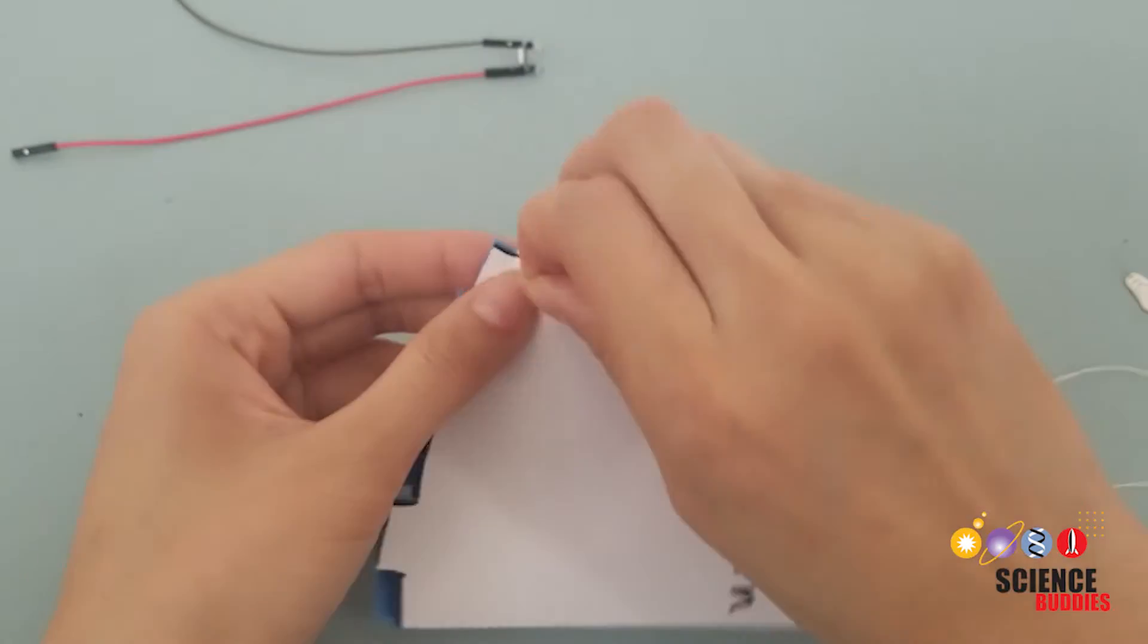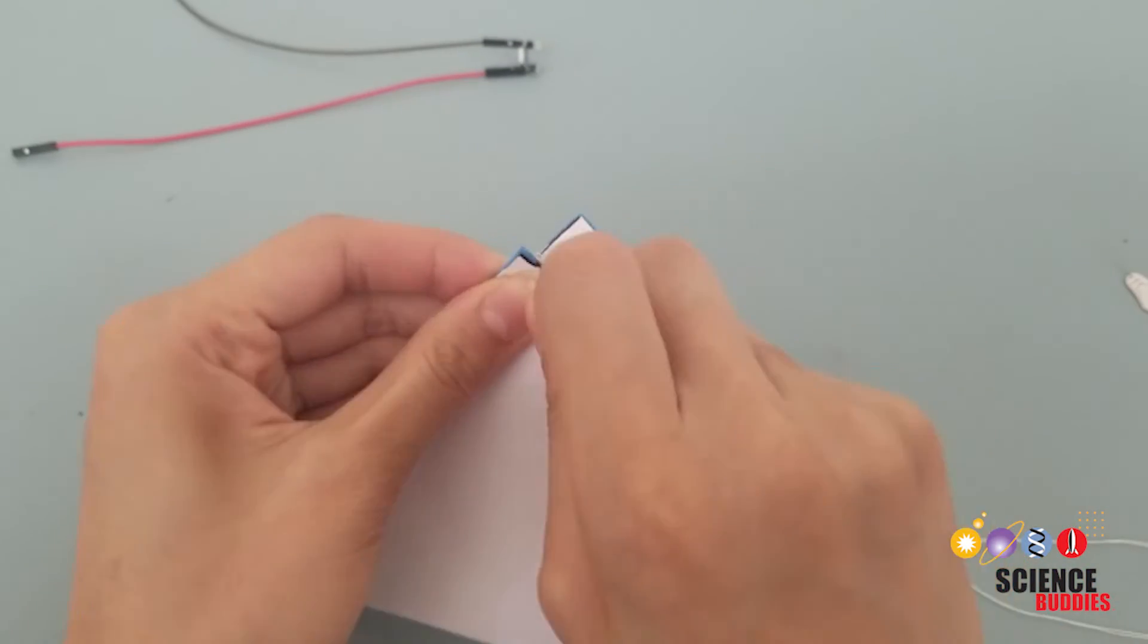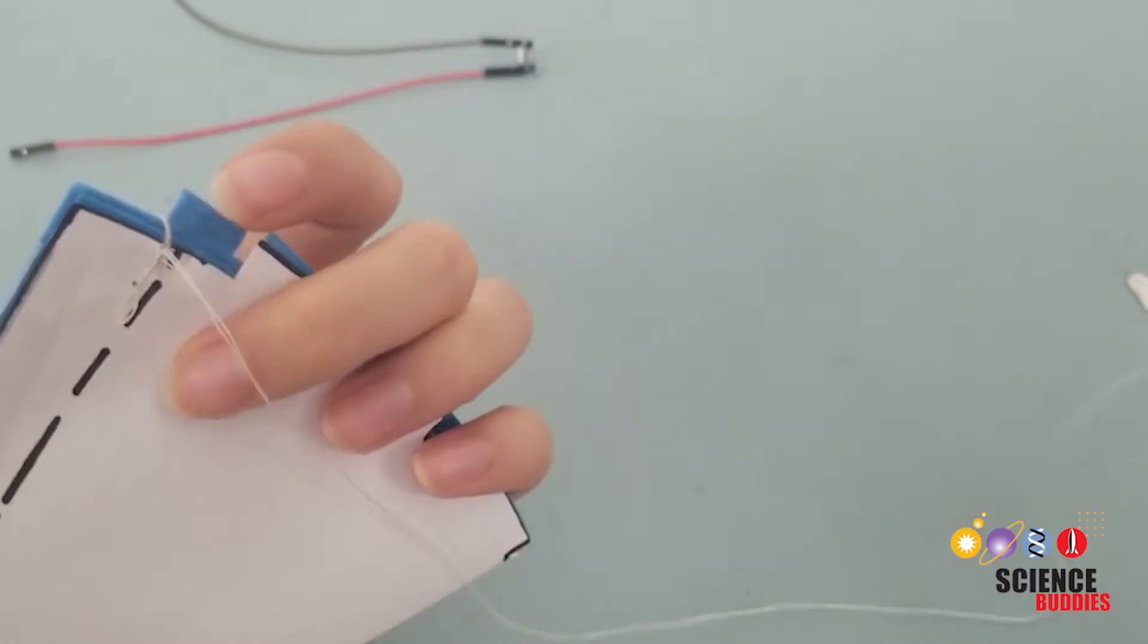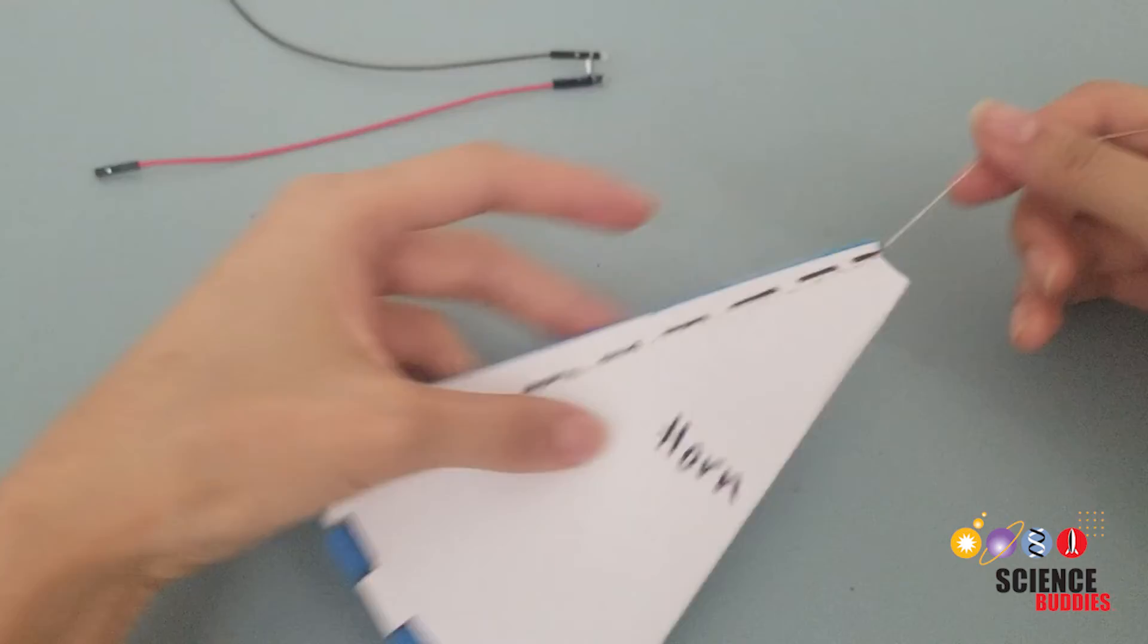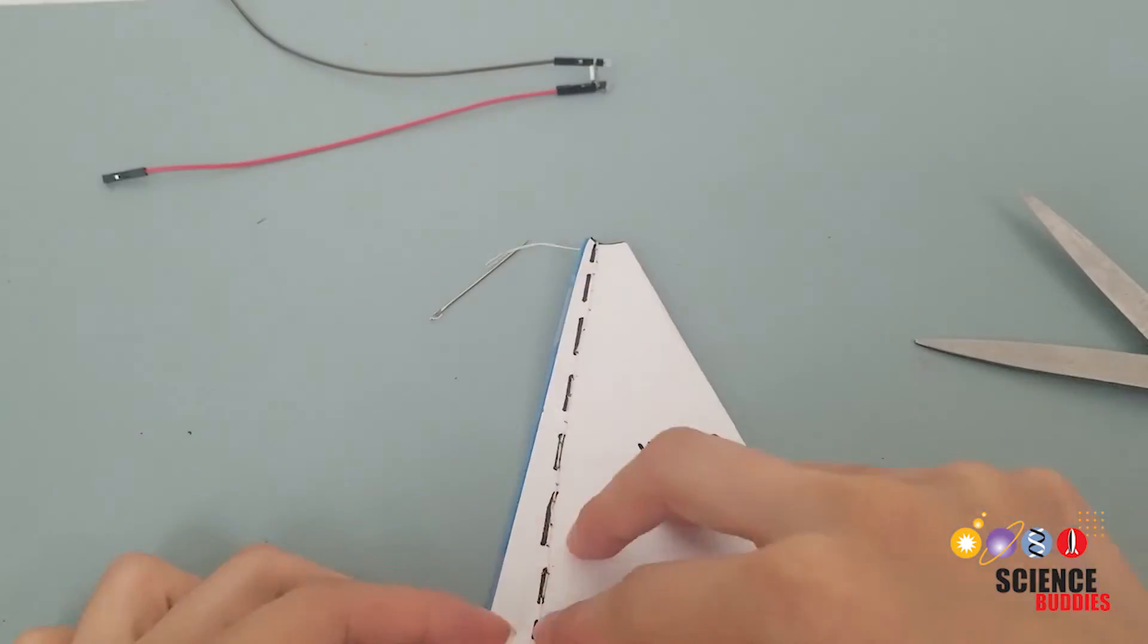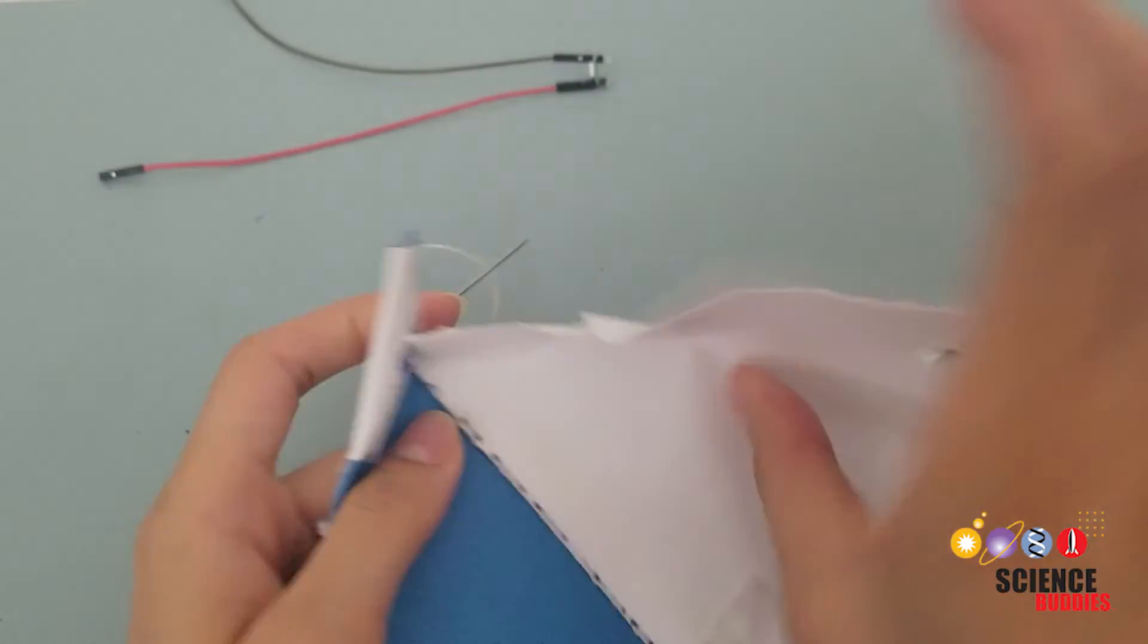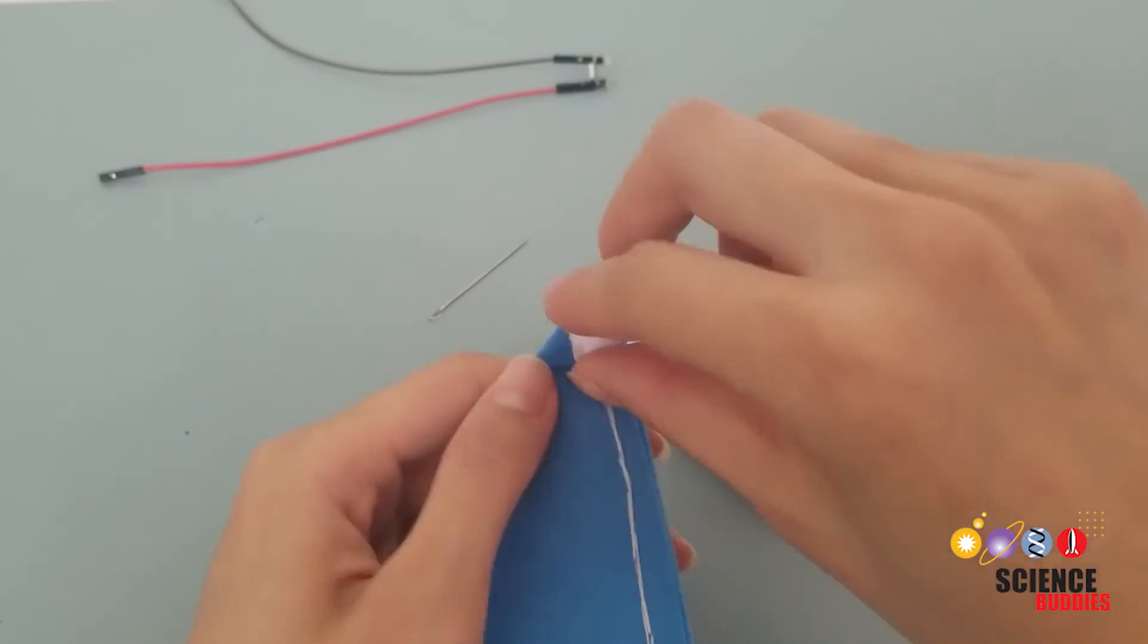If you've run out of thread, remember to leave about 2 inches so you can easily tie the end, and then just grab a new piece of thread and continue the stitches. Once you are done with the stitches, carefully rip off the paper layer. Your stitches should hold strong enough for your paper to easily come off.